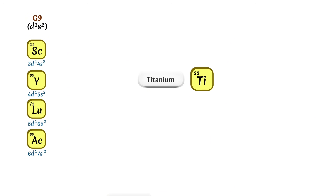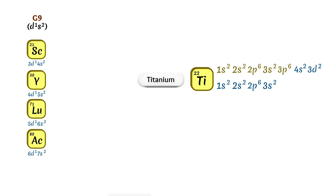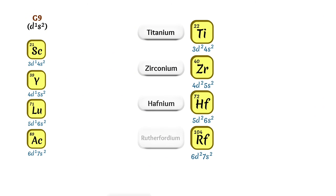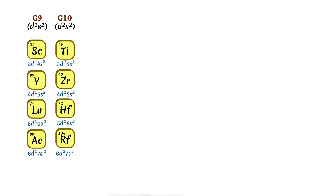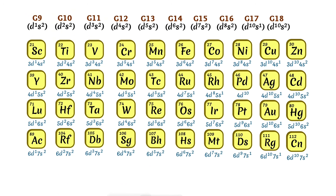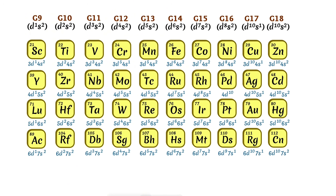Now look at titanium, which has 22 electrons. Its configuration by increasing shells is 1s²2s²2p⁶3s²3p⁶3d²4s². The d orbital contains 2 valence electrons, and together with 2 electrons in the outermost s orbital, there are 4 valence electrons. Elements such as zirconium, hafnium, and rutherfordium share similar configurations, forming a group with configuration d²s². Similarly, we can group elements with 5 through 12 valence electrons in the d and s orbitals into their own separate groups.